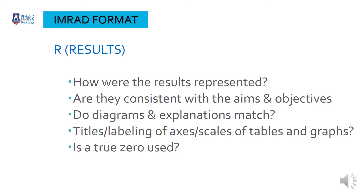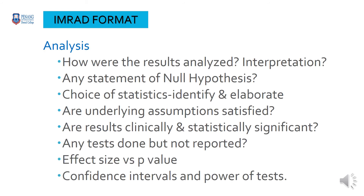R stands for Results. You have to find out how the results were represented — are they consistent with the aims and objectives? Do diagrams and explanations match? Check titles, labelling of axes, scales of tables and graphs, and whether a true zero is used. A is for Analysis. The questions to ask are: how were the results analyzed, interpretation, any statement of null hypothesis, choice of statistics, are underlying assumptions satisfied, are results clinically and statistically significant, any tests done but not reported? Look at the effect size versus the p-value and the confidence intervals and the power of tests.